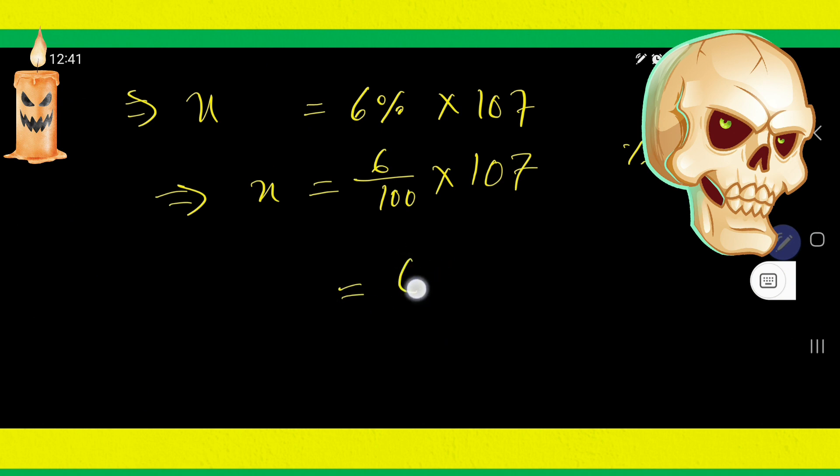You can rewrite this. You can take 100 here. Just rewriting. If you divide 107 by 100, the decimal will come here. So, 1.07.